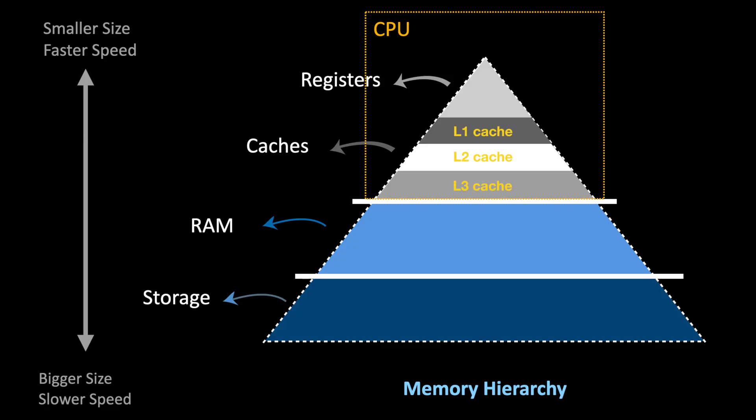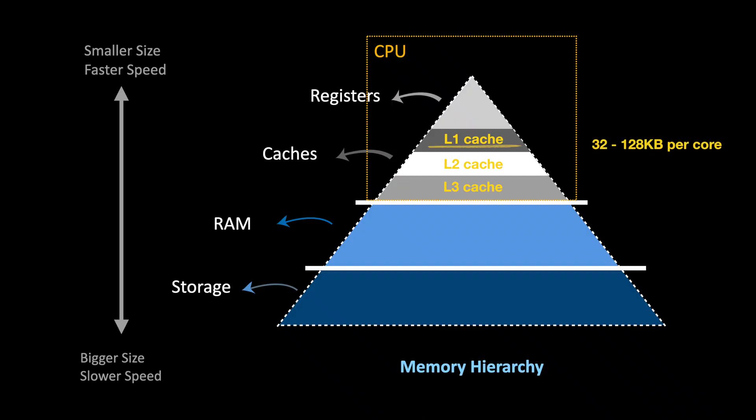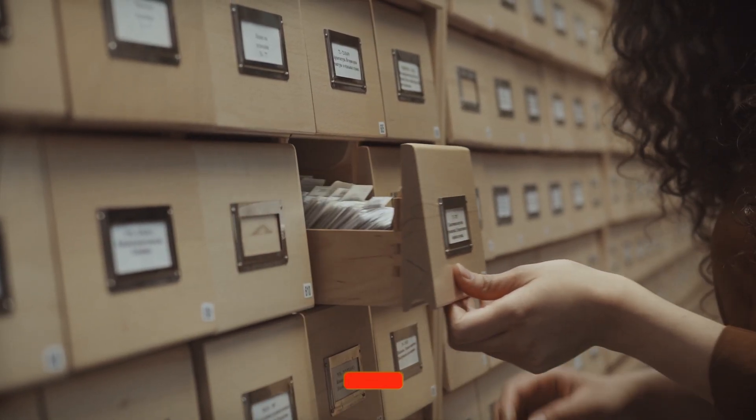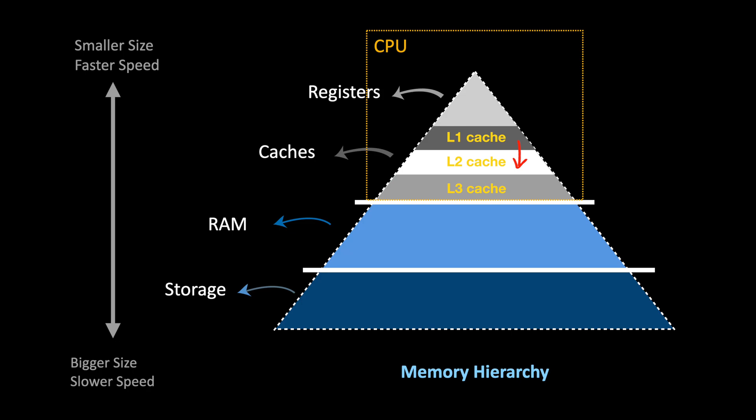Modern CPUs don't have only one layer of cache — they have a hierarchy. The three main levels are layer one, layer two, and layer three. Layer one is the smallest and fastest, located directly inside each CPU core making it extremely quick to access. The typical size of layer one cache is 32 to 128 kilobytes per core. Every time the CPU needs data it looks into layer one; if the data is there, it's a cache hit and the CPU gets the data instantly within a few nanoseconds.